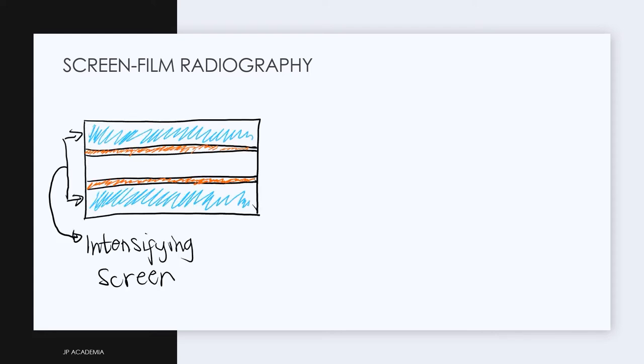In conventional radiography or screen-film radiography, the receptor consists of the film with the light-sensitive emulsion shown here in orange, placed in contact with either one or two intensifying screens which are just fluorescent materials.